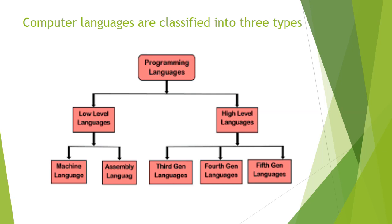Let us understand the classification of computer languages. There are basically two types: low level language and high level language. Under low level language, there are two types — machine language and assembly language. Under high level languages, the third, fourth and fifth generation languages come. These are all high level languages which are very easy to understand and learn. Let us discuss each one by one.